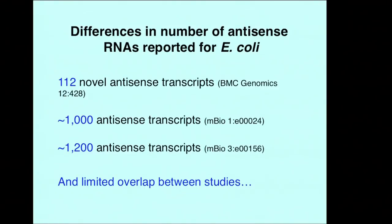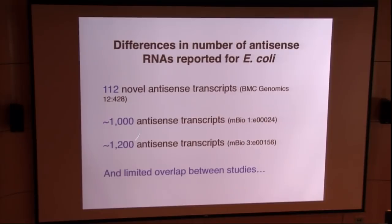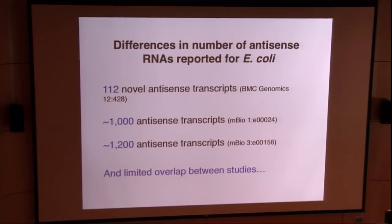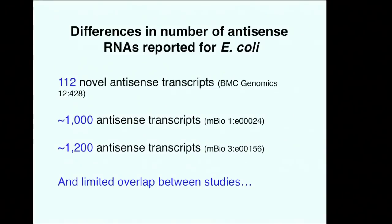If you just look at E. coli, which has been studied for many years, the number of antisense RNAs reported can vary significantly — from tens to thousands, compared to about 4,000 protein-coding genes. And strikingly, if you compare the antisense RNAs reported by different groups, there's surprisingly little overlap. All these groups are finding a thousand antisense RNAs, but they aren't all the same. So how can you capture information about the confidence in the data and variability between different groups?